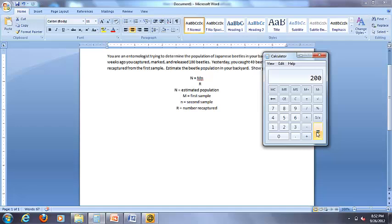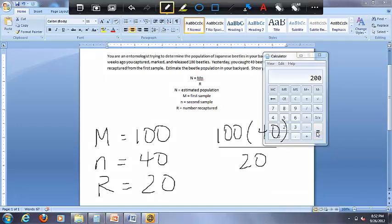So the estimated size of the population equals 200 beetles. And we're going to label that. So that's just one sample for you to see how this mark recapture estimate works.